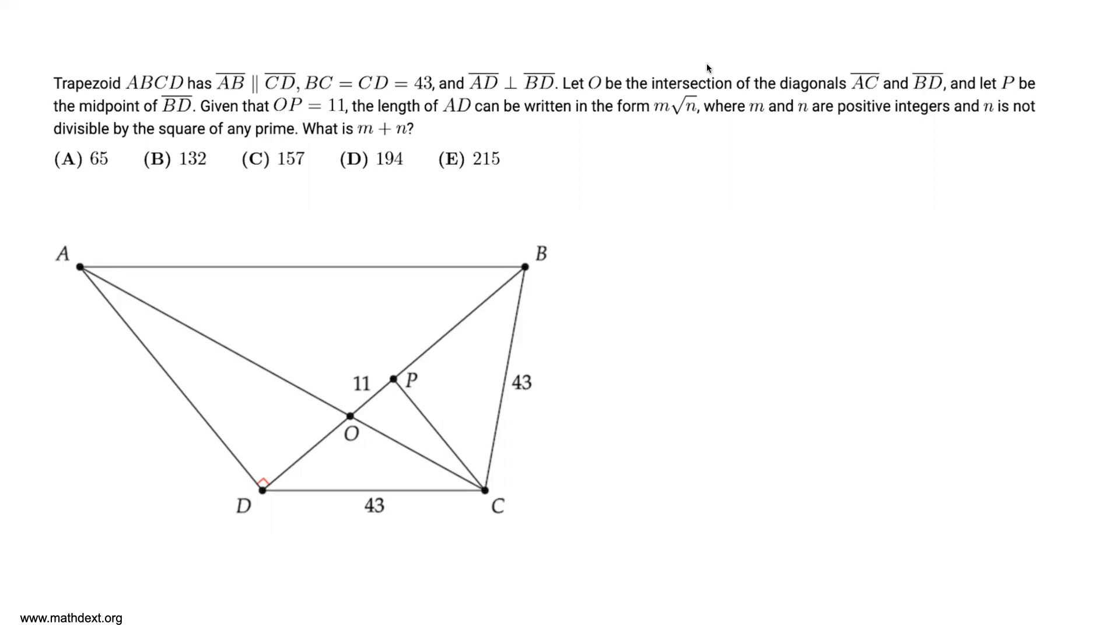Let O be the intersection of the diagonals AC and BD and let P be the midpoint of BD. Given OP is 11, the length of AD can be written in the form M square root of N where M and N are positive integers and N is not divisible by the square of any prime. What is M plus N?